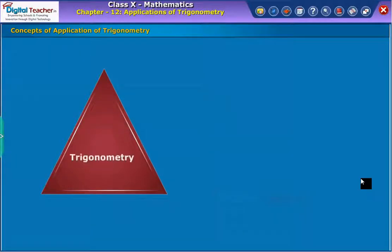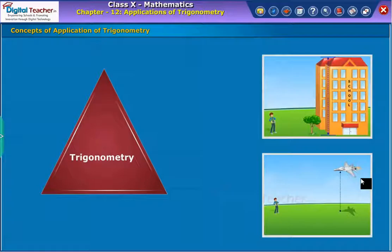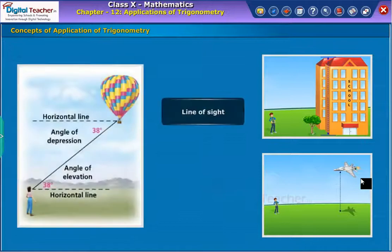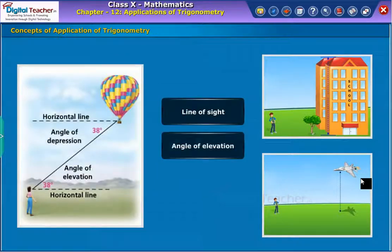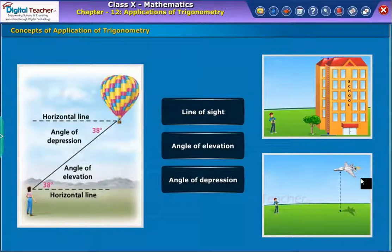Concepts of application of trigonometry. In order to apply the knowledge of trigonometry in measuring the heights of objects, we must know the meaning of certain terms. These terms are the line of sight, the angle of elevation, and the angle of depression. Let us learn about each of these terms in detail.